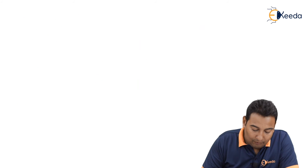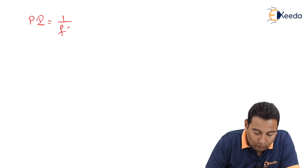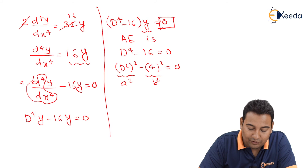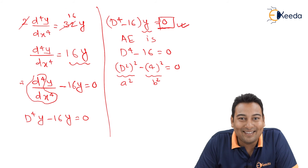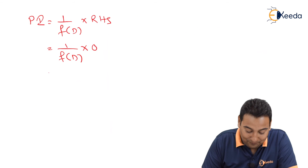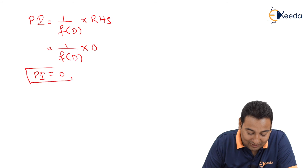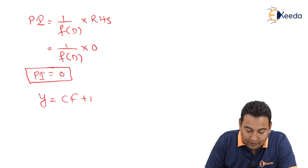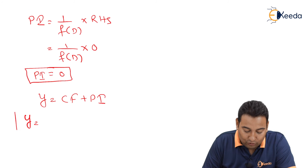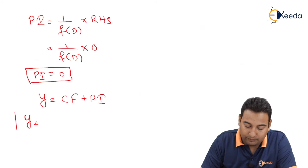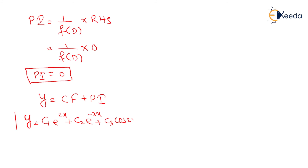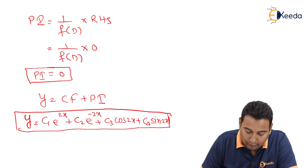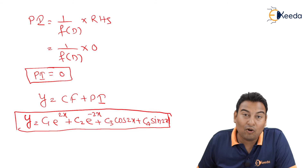Now let's find the particular integral (PI). The PI formula is 1/f(D) × RHS. Looking at the equation, the RHS is 0. When RHS is 0, PI is also 0 — this is the simplest case. Therefore the complete solution is y = CF + PI = CF + 0 = CF. So the required extremal is y = c₁e^(2x) + c₂e^(−2x) + c₃cos(2x) + c₄sin(2x). Hope you understood. Thank you.